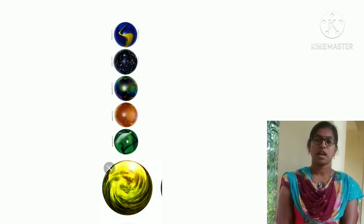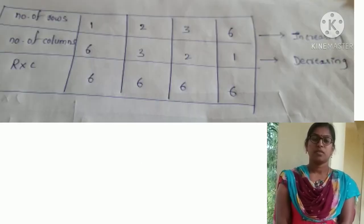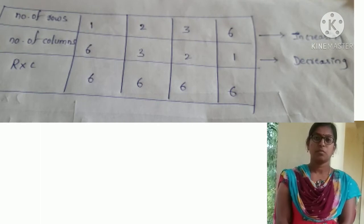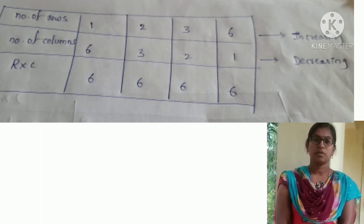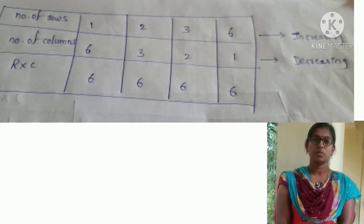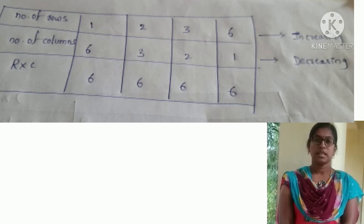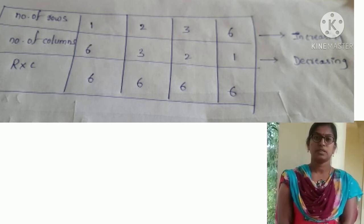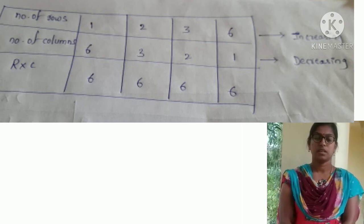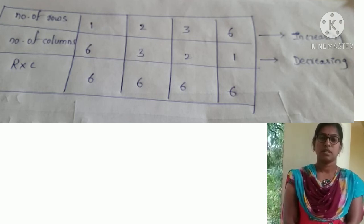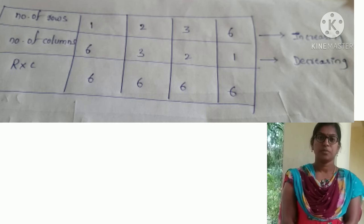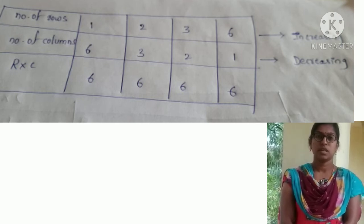Also, 6 marbles can be arranged in 6 rows and 1 column. Let us frame a table for the arrangement of marbles. What do you observe? As the number of rows increases, the number of columns decreases. We see that R times C is constant in all the above situations.